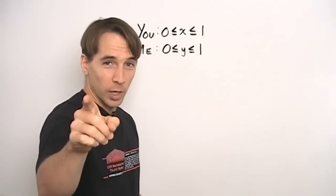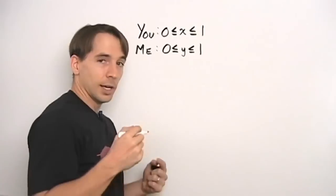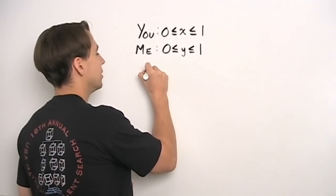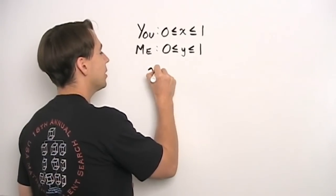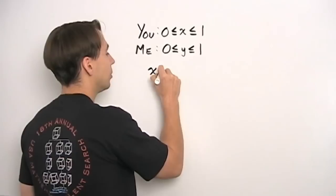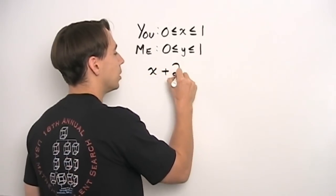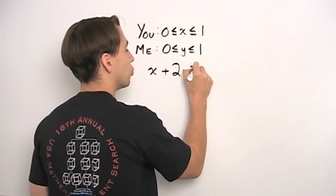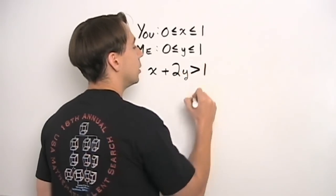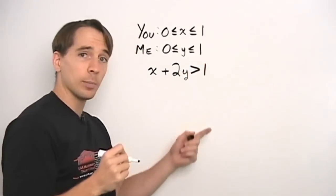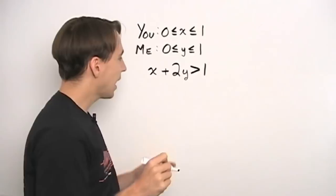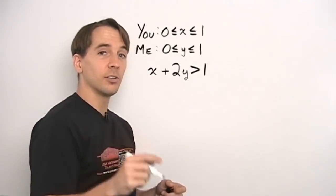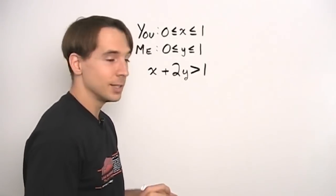The way you win, and I send you and your family off to Disney World, is if x — your number — plus two times my number y is greater than one. So if you picked a half and I picked two thirds and we end up greater than one, you're going to Disney World.